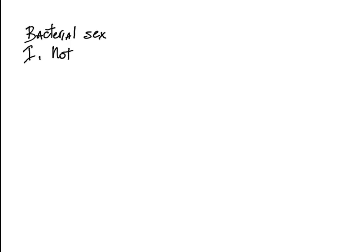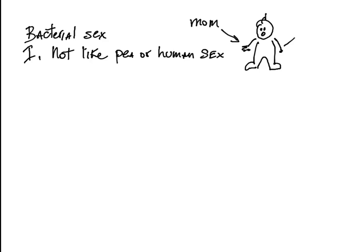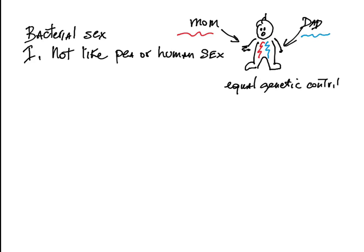There is no traditional sex in bacteria, at least not in the traditional meaning of sex. Sex between eukaryotes, like in pea and human, involves fusion of two cells and results in a progeny whose nuclear genome is contributed equally from mom and from dad.